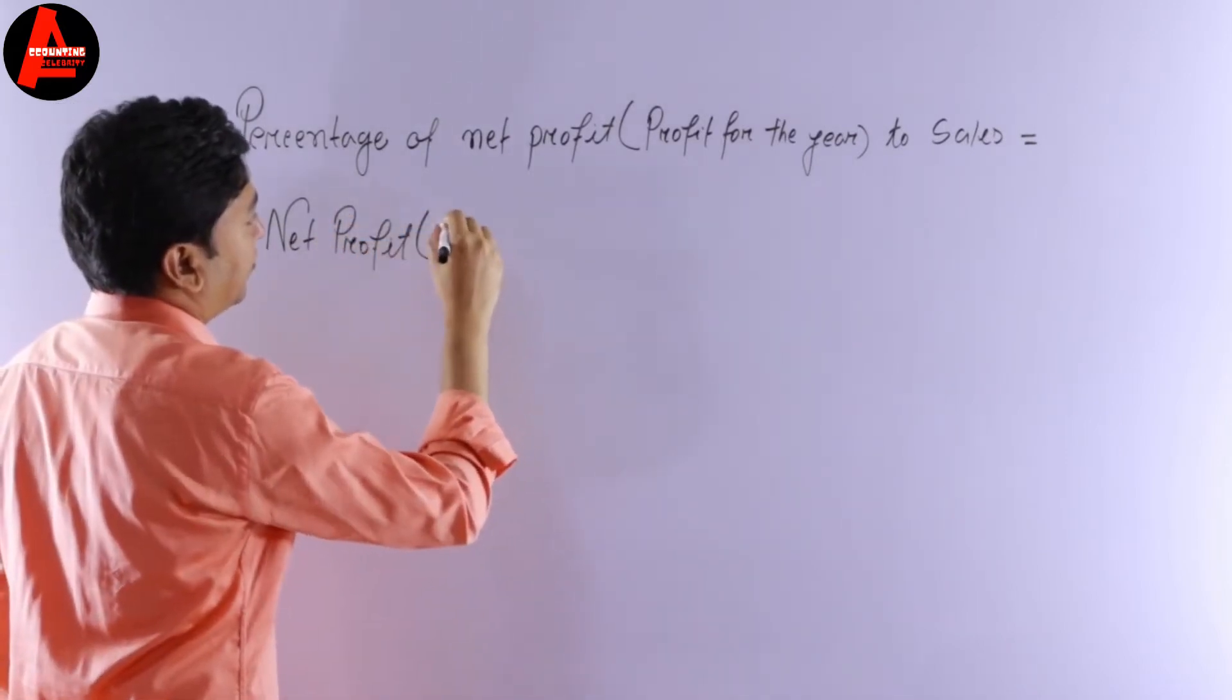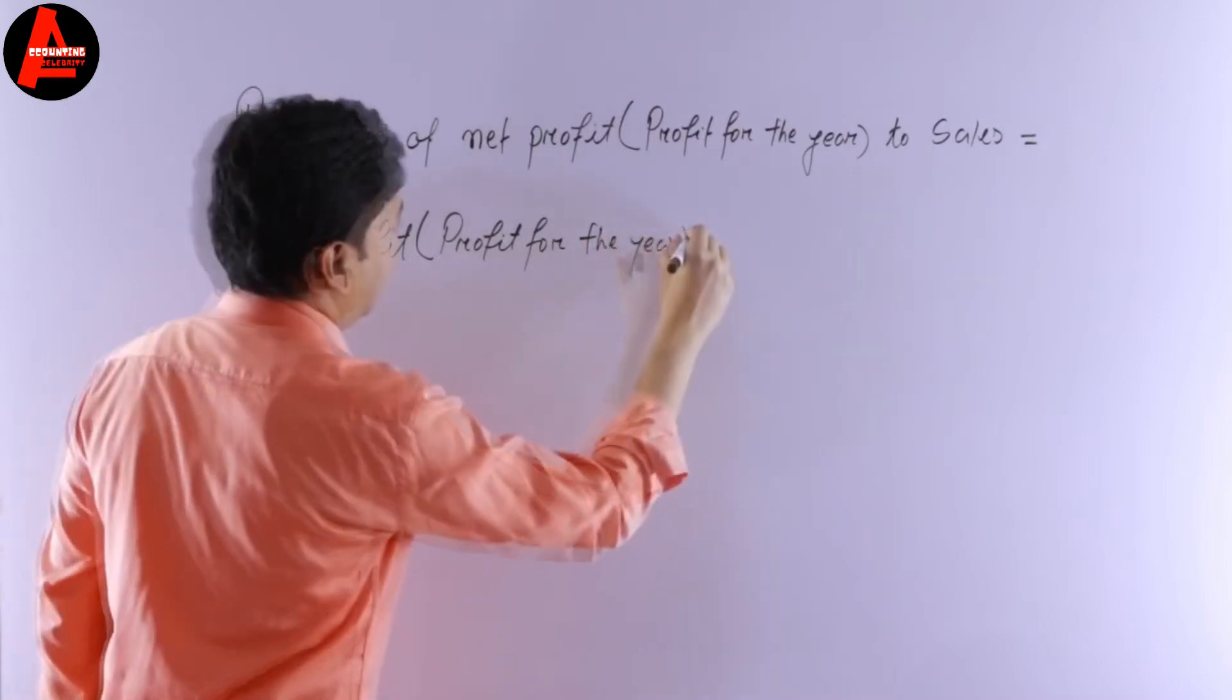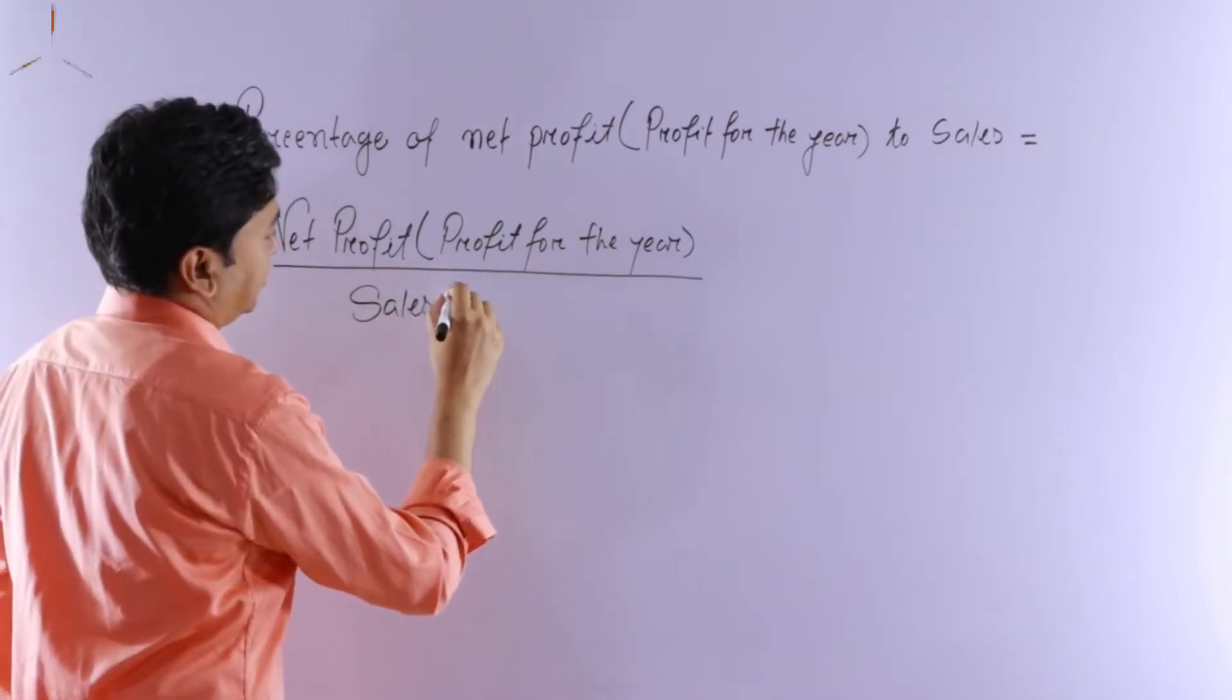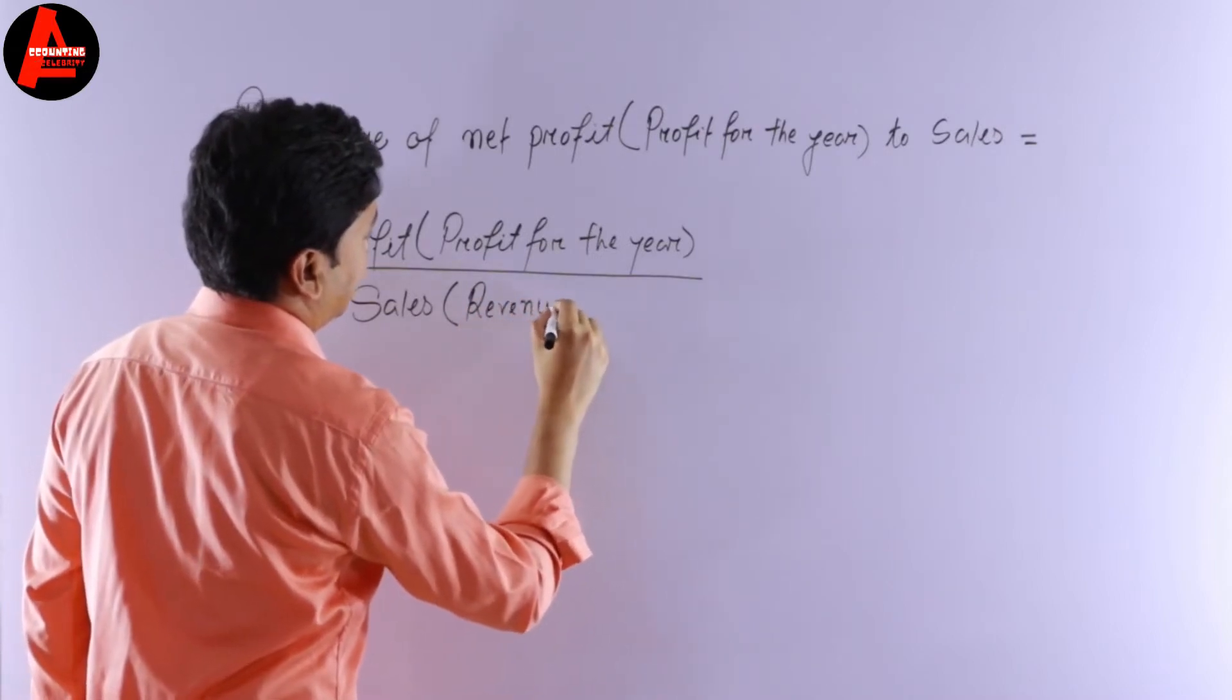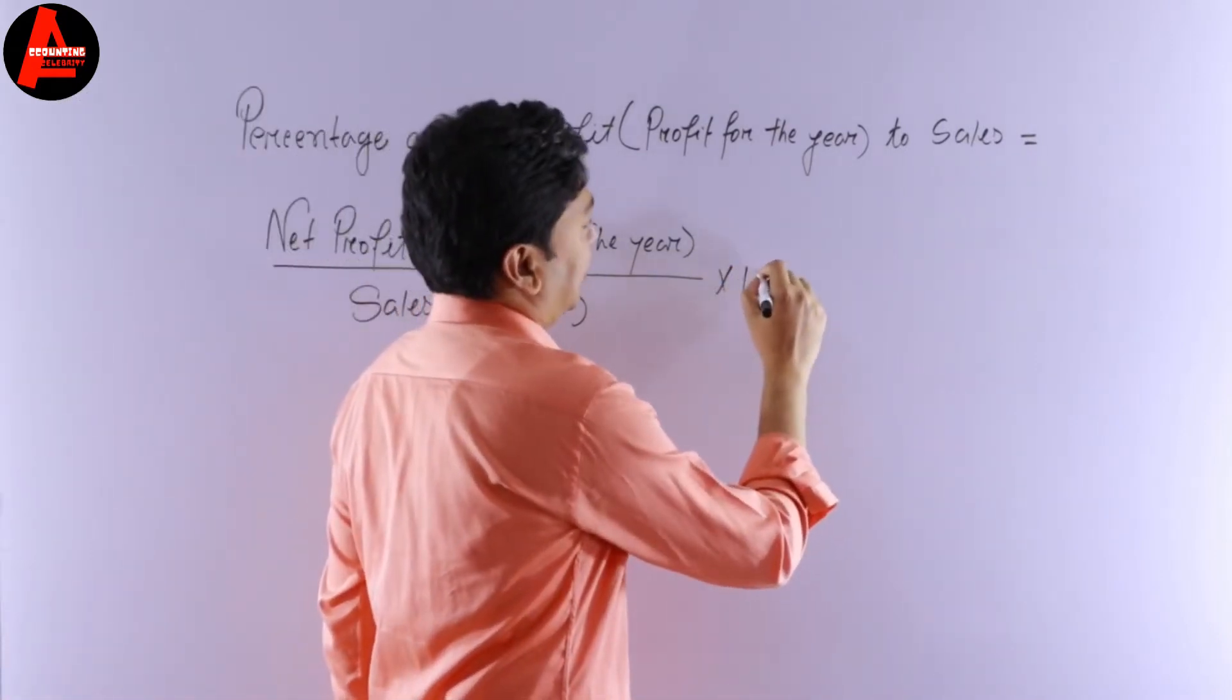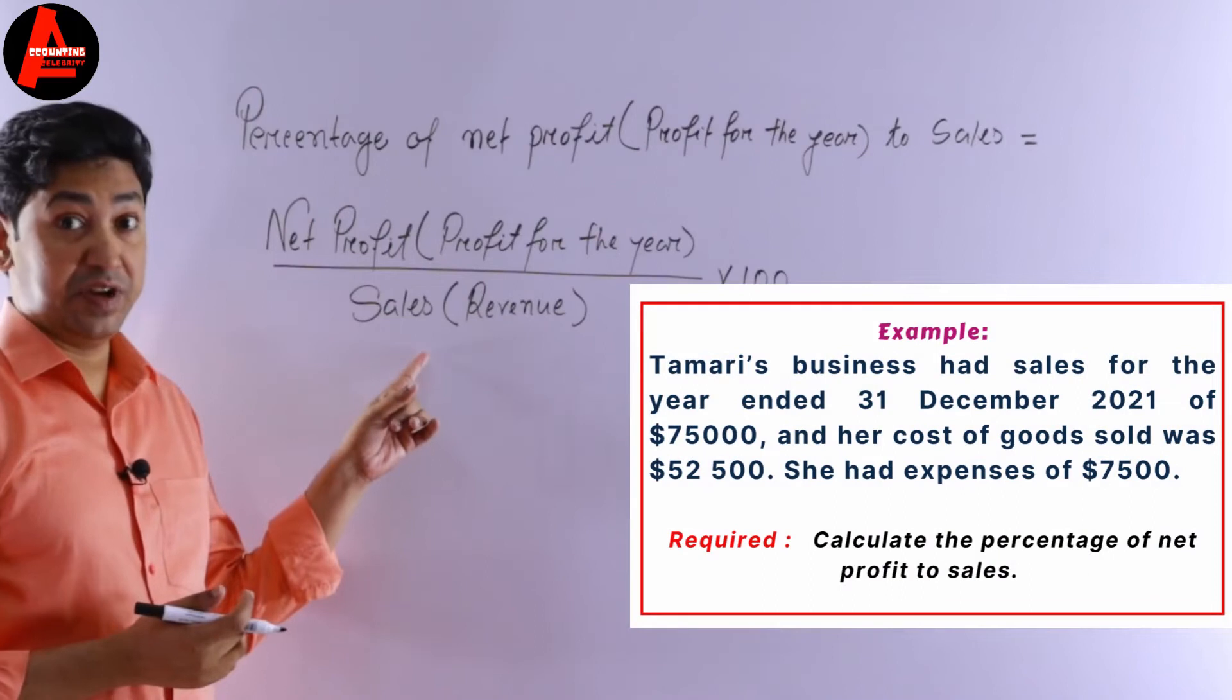It is also called profit for the year. So let us write here profit for the year, divided by sales. Sales is also called revenue, then multiply by 100. Very good.